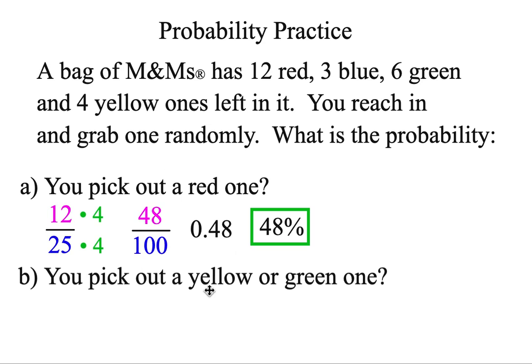What is the probability you pick out a yellow or a green one? If you see or, think add. You just want to collect the green and the yellow. 6 plus 4, 10 things that are favorable. Divided by 25 still. Let's use that 4 trick one more time. And that will give 100. This time, 40 up top. And that's the same thing as 40%.